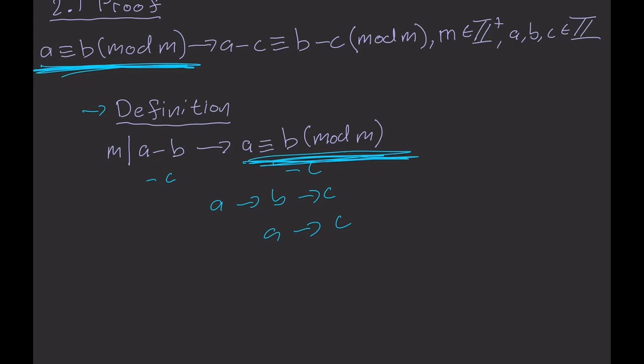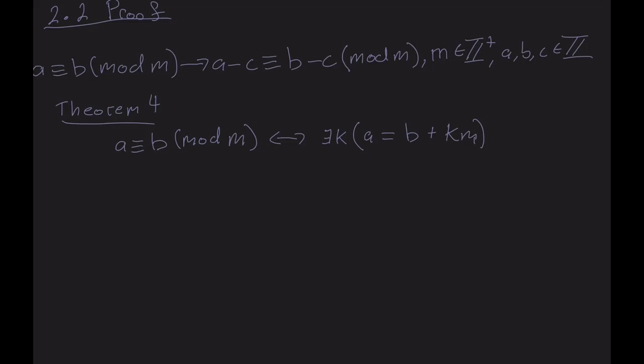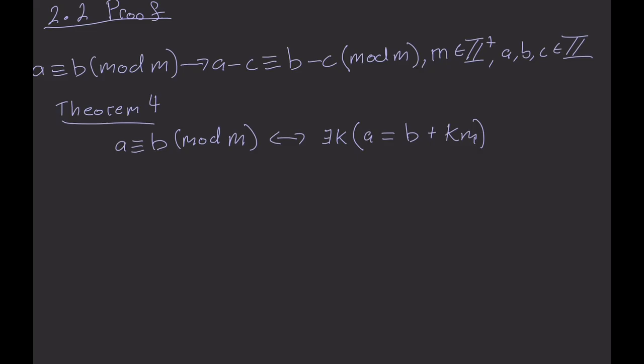Luckily, there's a theorem that follows directly from the definition that will help us prove this. It is theorem four. Theorem four states that if a is congruent to b modulo m, if and only if there exists some integer k such that a equals b plus km. And so with this, we can start with our hypothesis, a is congruent to b mod m, which we are assuming is true because it's the hypothesis of the situation.